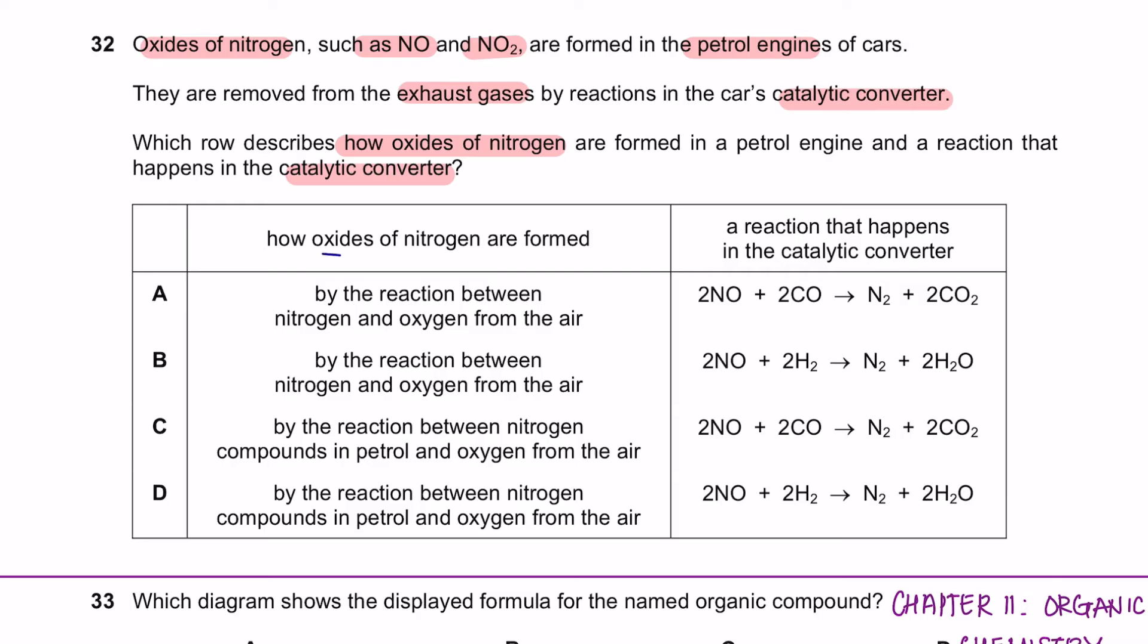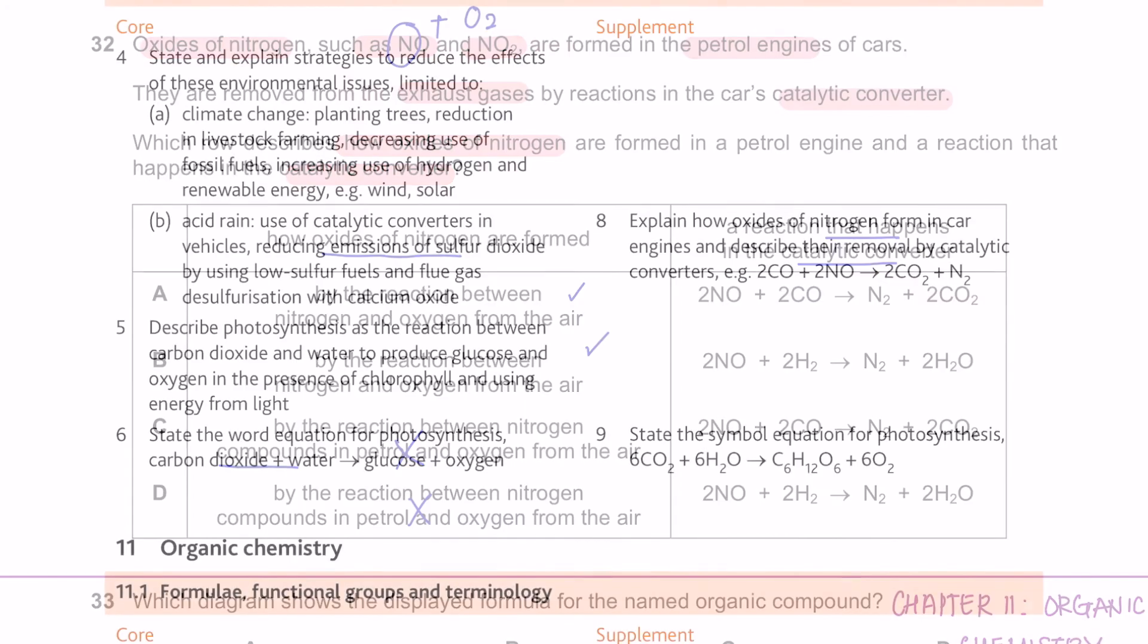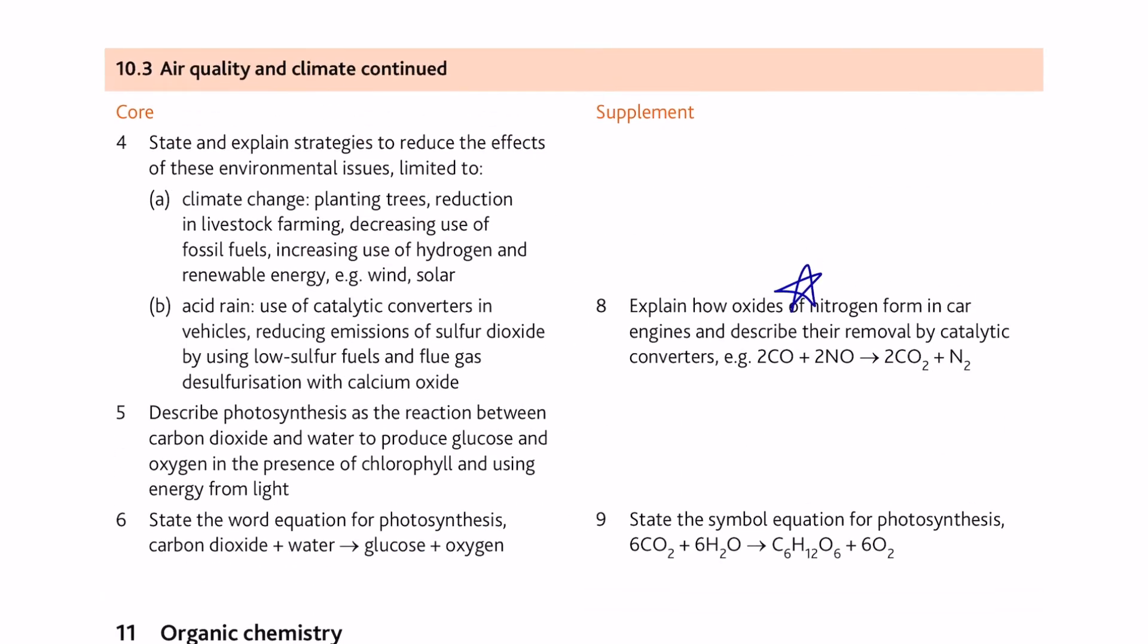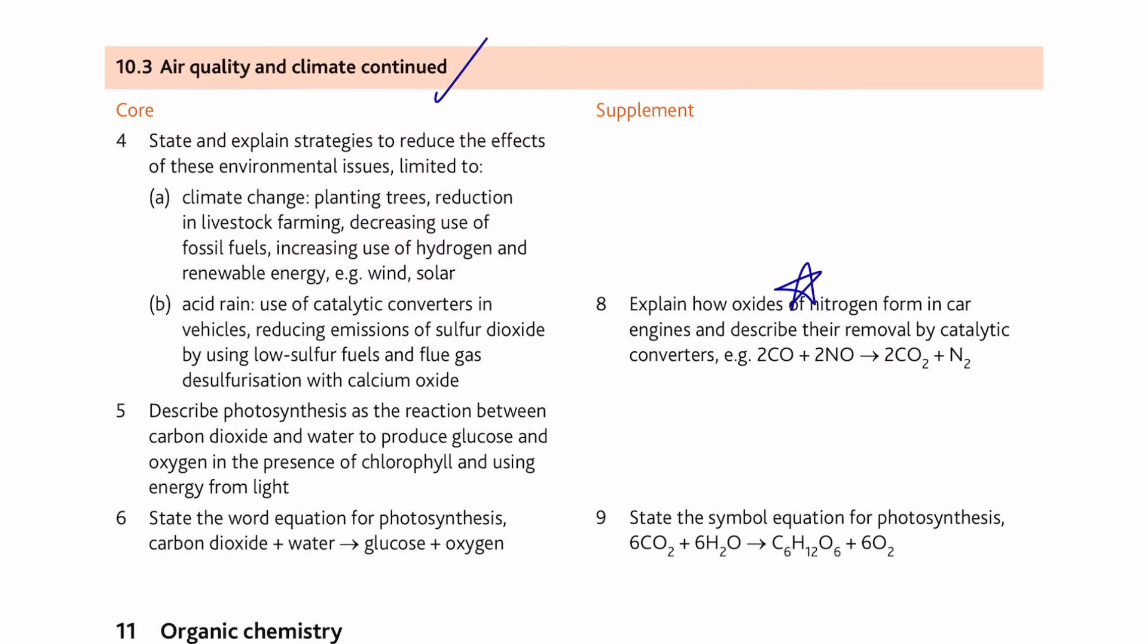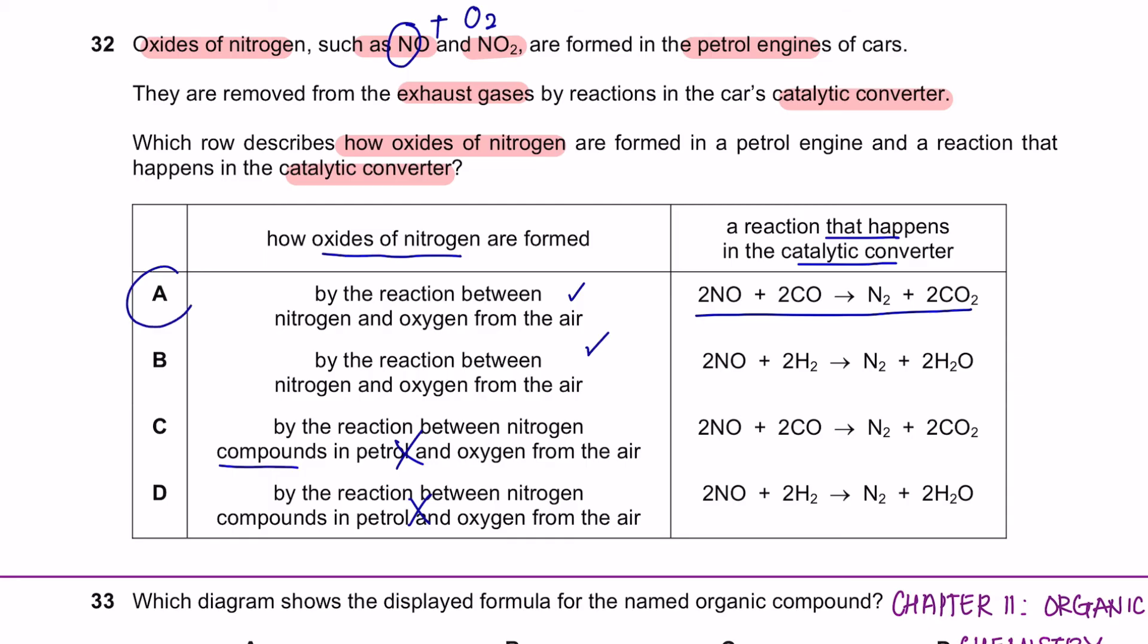Oxides of nitrogen are usually formed from the reaction of nitrogen and the oxygen molecules from the air in the presence of heat. And next, what happens in the catalytic converter? You can find this in your course specification under 10.3. It's carbon monoxide reacting with nitrogen oxide forming carbon dioxide which is safe to release compared to carbon monoxide which is a toxic gas. So the answer here is E.